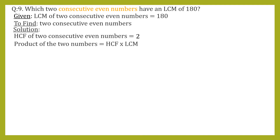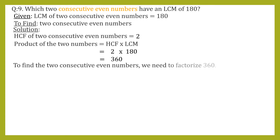We apply the formula: product of two numbers equals HCF into LCM. The value of HCF is 2, value of LCM is 180, so the product is 2 into 180 equals 360. To find two consecutive even numbers, we need to factorize 360. Since 360 is even, we start with table of 2: 2×180=360, then 2×90=180.